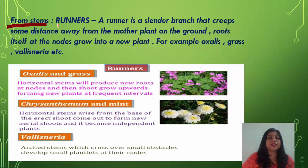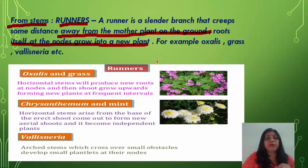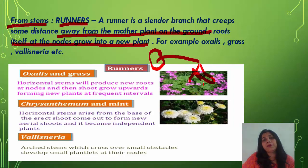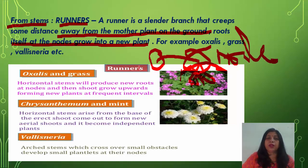Vegetative reproduction from stems includes runners. A runner is a slender branch that creeps some distance away from the mother plant on the ground, roots itself at the nodes, and grows into a new plant. The runner creeps from the mother plant and develops roots at a node, and a new plant grows from there. Examples of runners are Oxalis, grass, and Vallisneria.